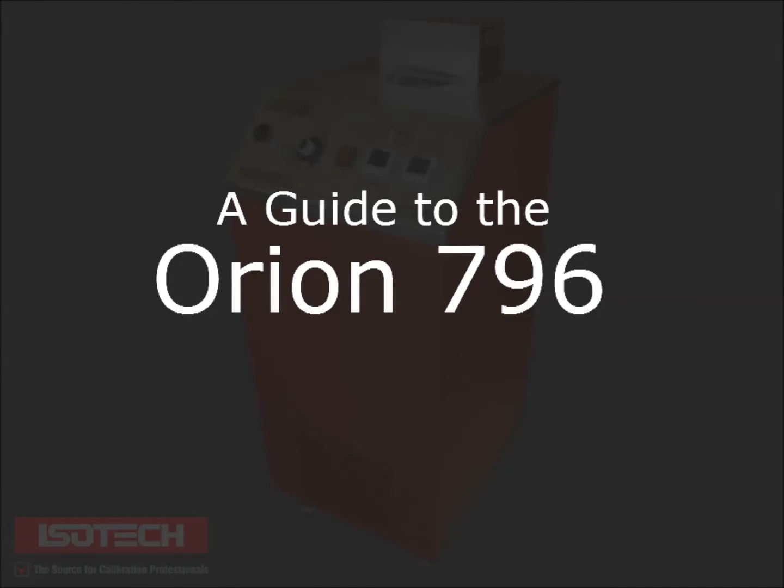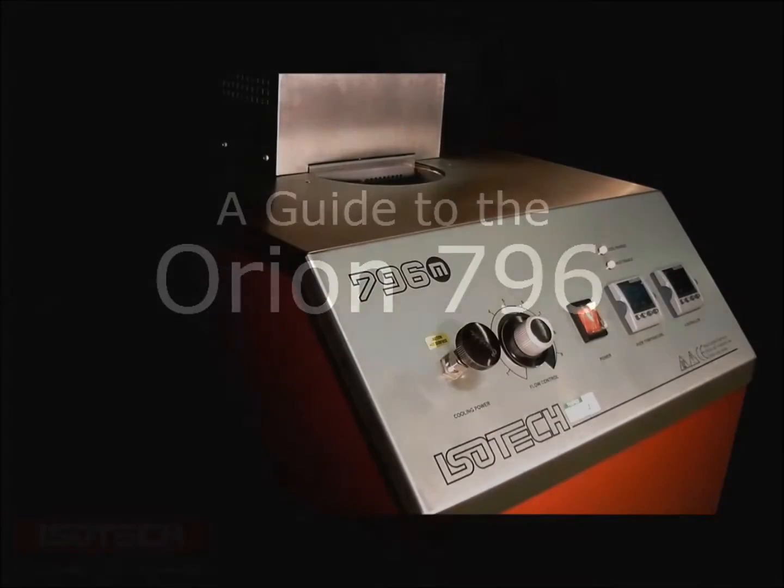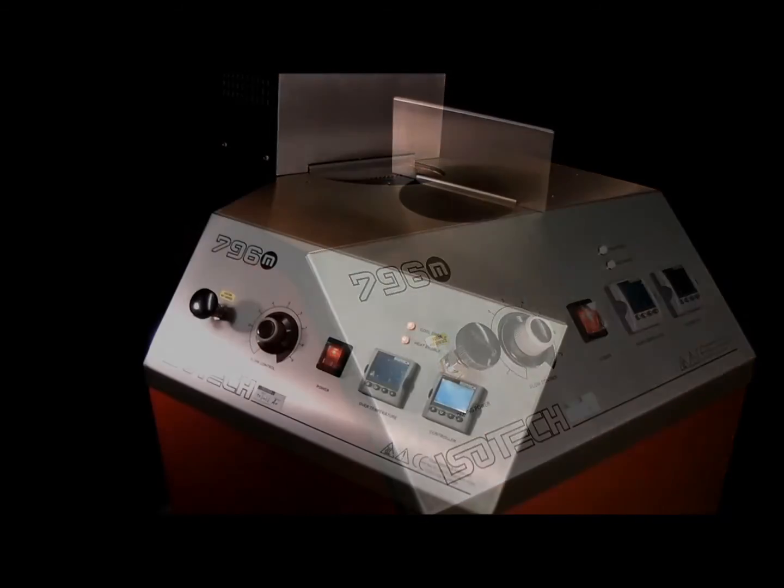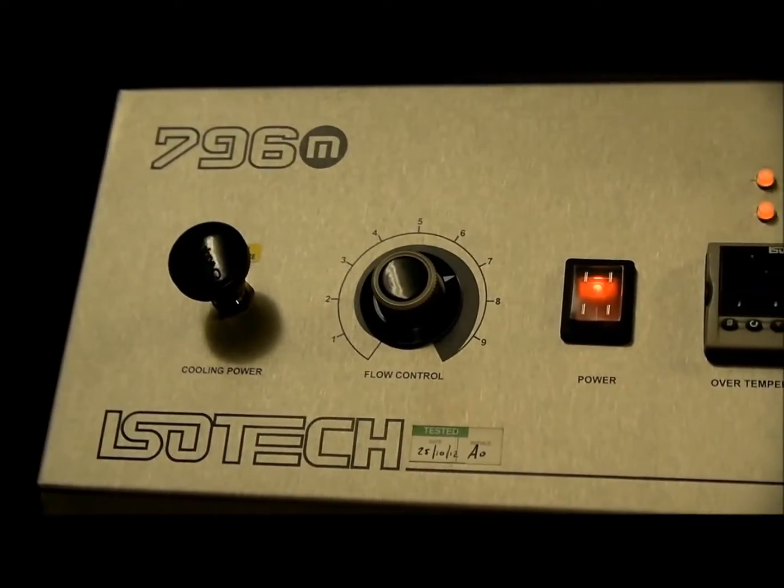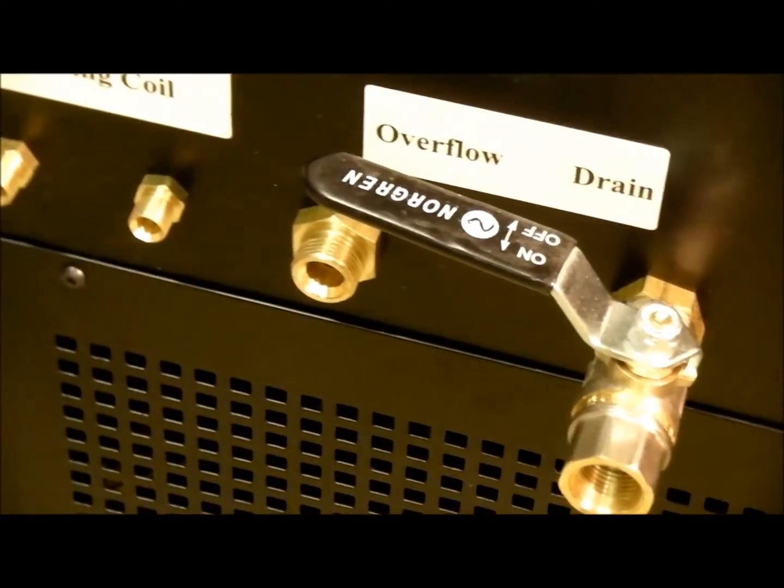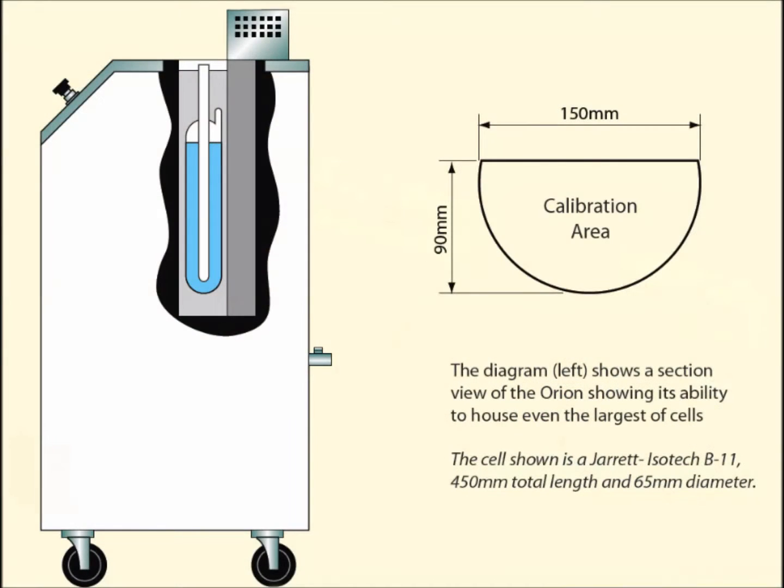A guide to the Orion. The Orion stirred liquid bath is suitable for low uncertainty calibration of long thermometers, including liquid in glass and extended length SPRTs. It has a depth of 470 mm.